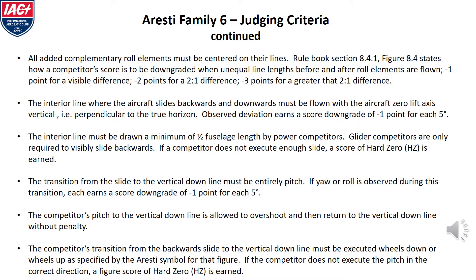When judging Aresti Family 6 figures, look for all added complementary roll elements to be centered on their lines. The interior line where the aircraft slides backwards and downwards must be flown with the aircraft's zero-lift-axis vertical — if the aircraft is not vertical, it's a score downgrade. For power competitors, the interior line must be a minimum of one-half fuselage length sliding backwards; glider competitors only need to visibly slide backwards. The transition from the slide to the vertical down must entirely be pitched — if yaw or roll is observed, it's a score downgrade. The competitor's pitch to the vertical down line is allowed to overshoot and then return to the vertical down line once without penalty.